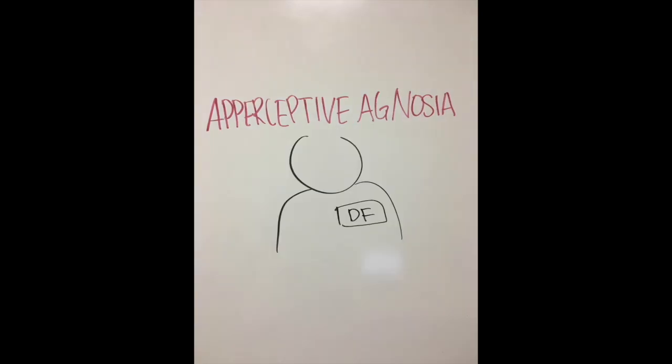A famous cognitive example of a patient with aperceptive agnosia is patient DF, who struggled with recognition due to carbon monoxide poisoning, but was able to draw the objects from memory.